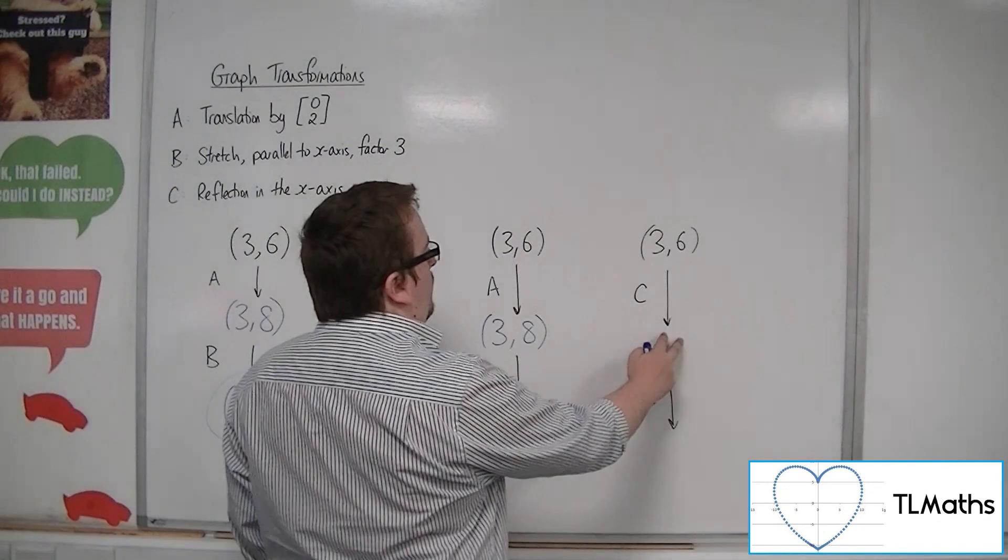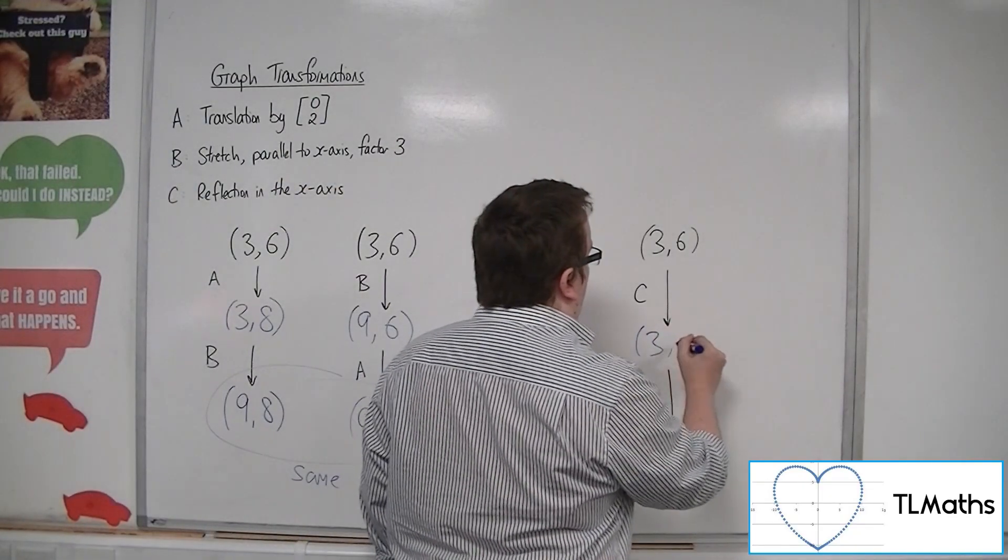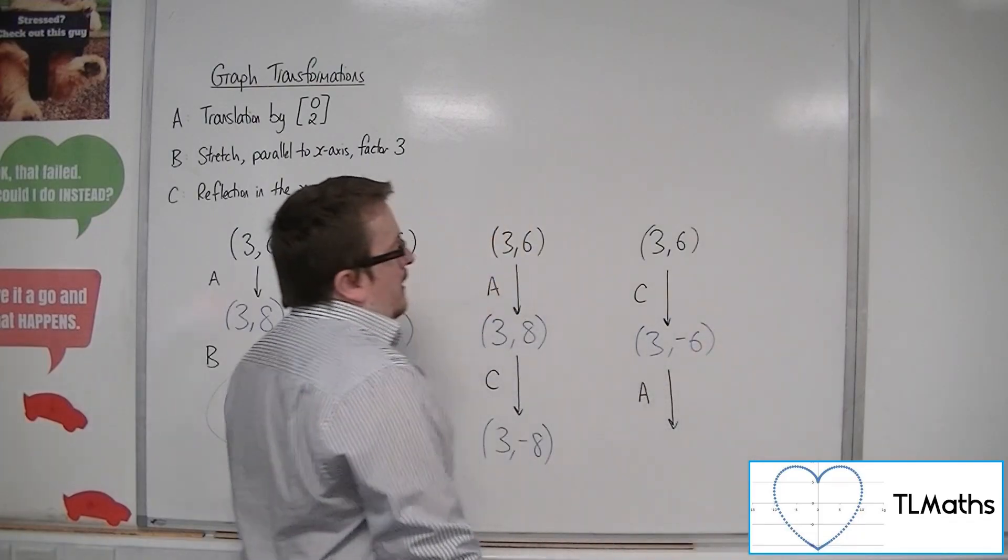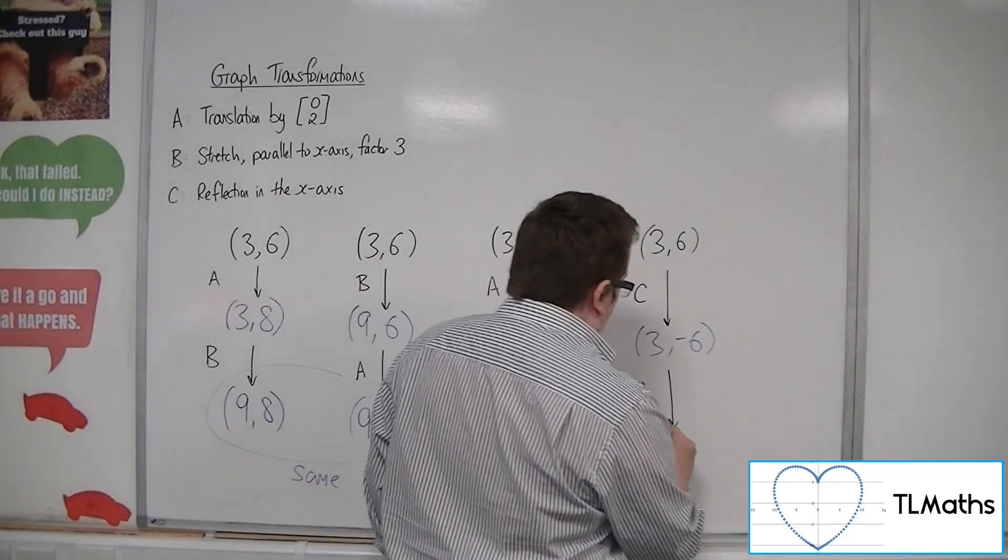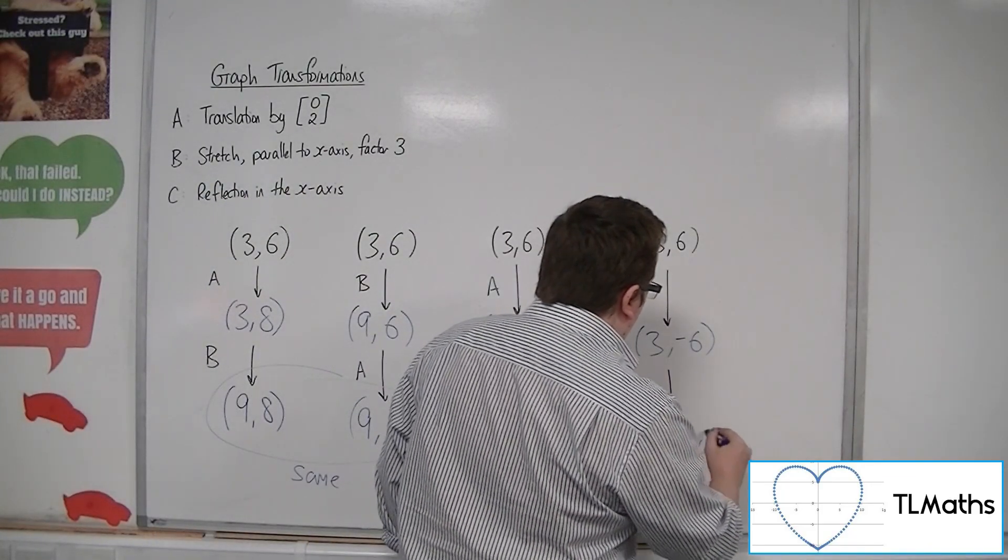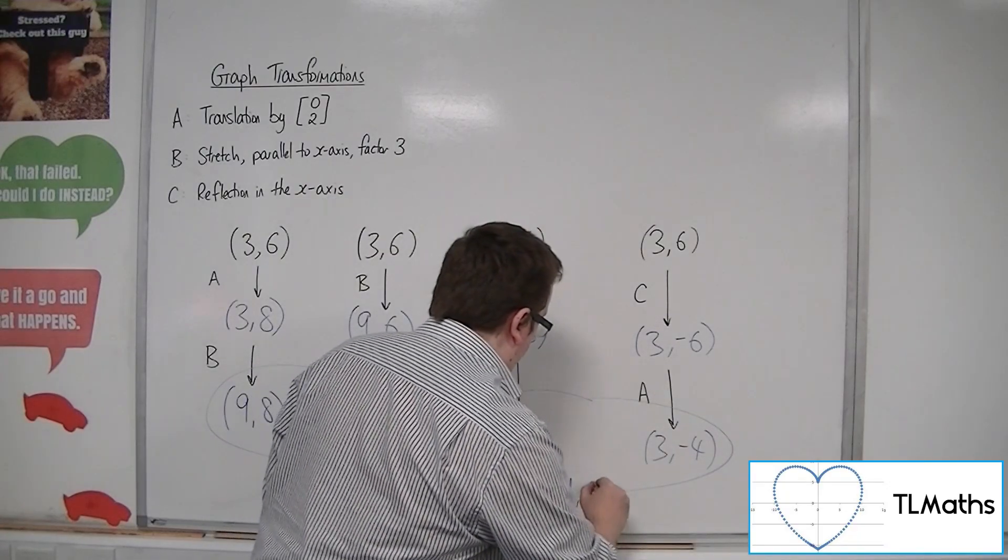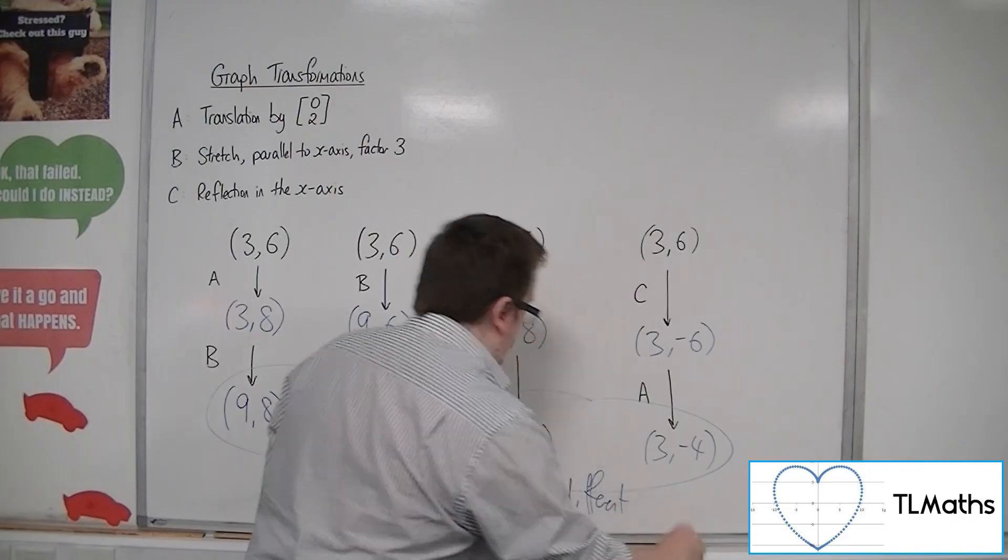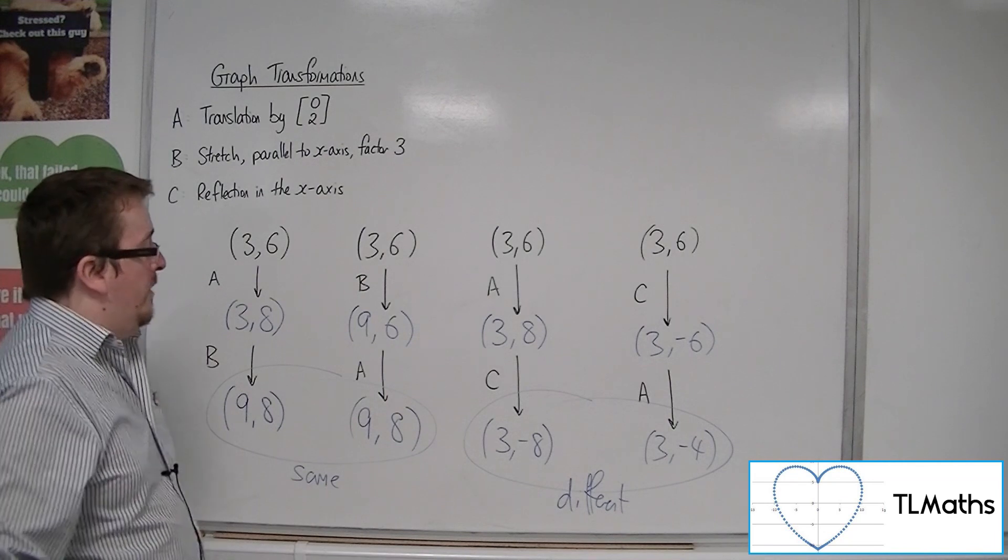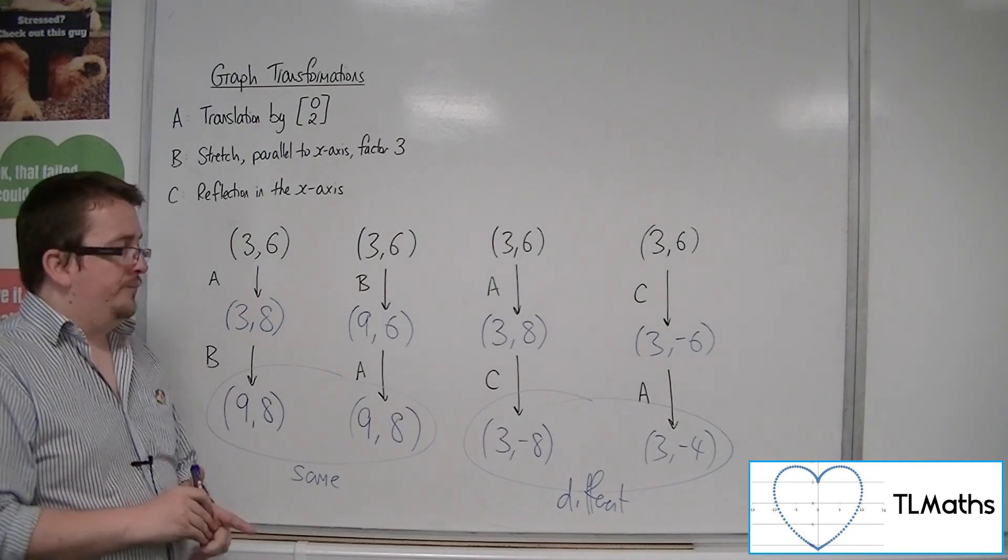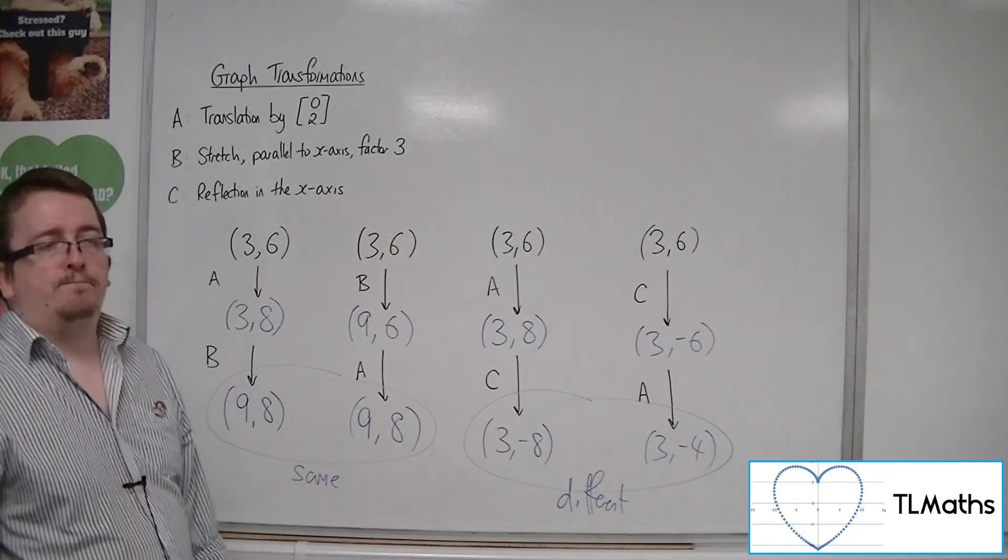Now, if we perform the reflection first, we would get (3, -6). But then, if we would perform the translation, that would move it up two units, which would be (3, -4). And clearly, these are different. So, in the first case, the order of the transformations didn't make any difference. In the second example, they did.